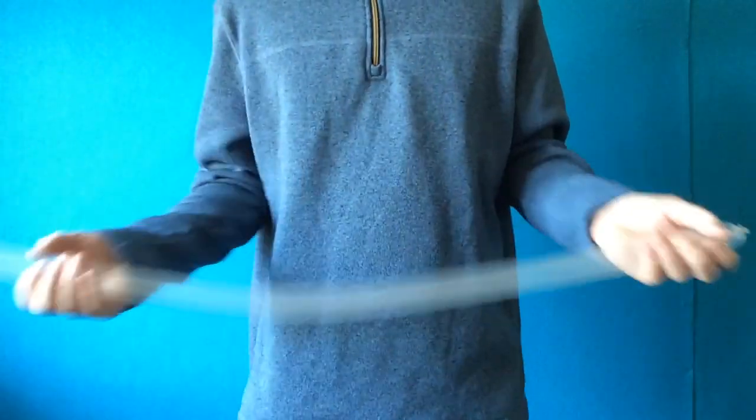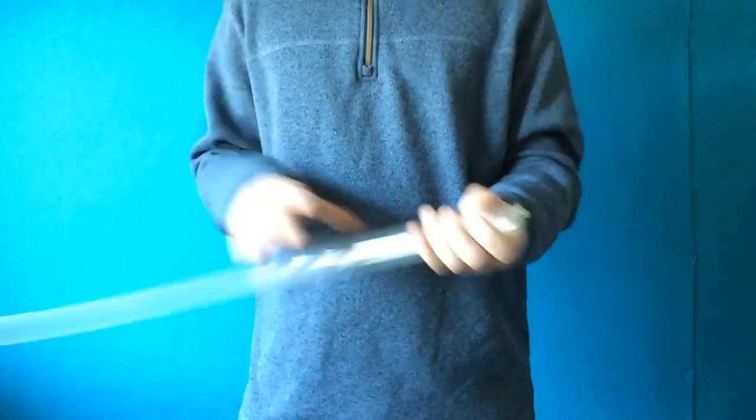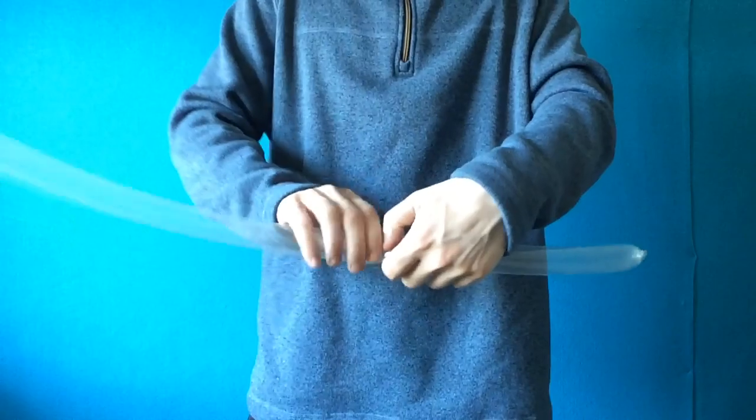We're starting with the clear and the wings. So you want to inflate it pretty much almost all the way with just a little bit of room to work with. And there's a bunch of ways you can measure this. I like to go 16 finger lengths.